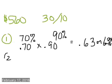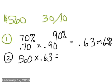Then for number two, I'm going to take my $560, and I'm going to multiply it by 0.63, and I should get $352.80.